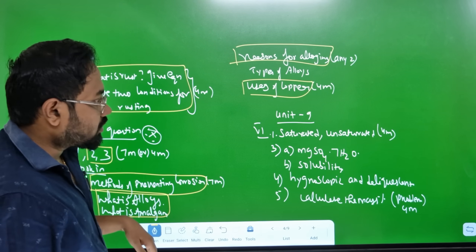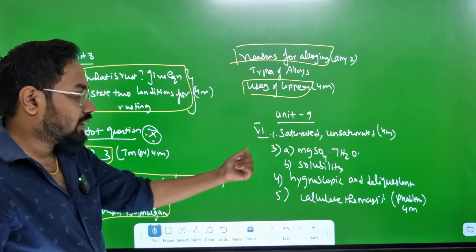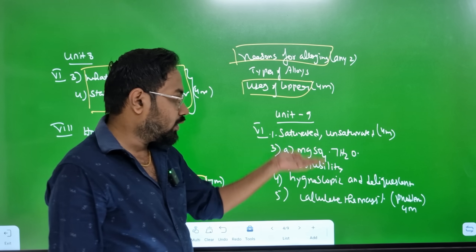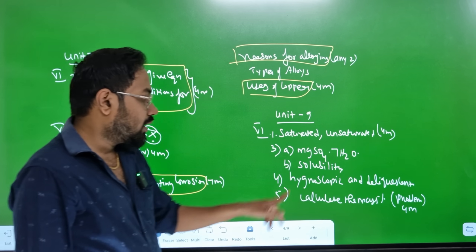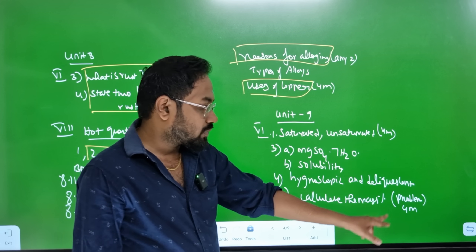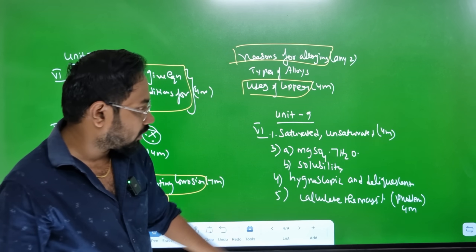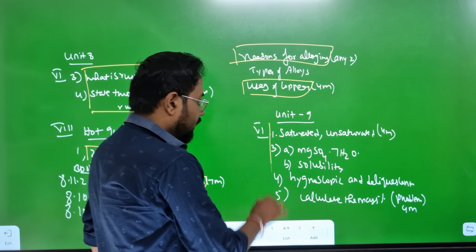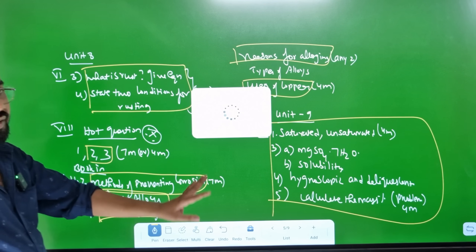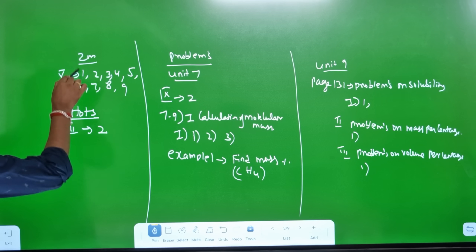Unit 9. Saturated and unsaturated - 4 marks. Roman number 6. MgSO4·7H2O. Solubility - reduce 7 marks and 4 marks. Hygroscopic and deliquescence - 4 marks. Calculate the mass percentage is a problem in 4 marks. Roman number 6: 1, 3, 4, 5. You can read all of them. Factors affecting solubility - that's not a good idea to skip. You can read the 2 marks. Now you can read the A, B sections.